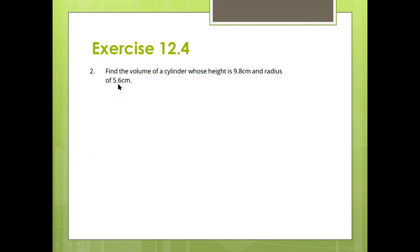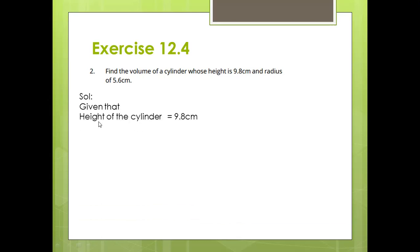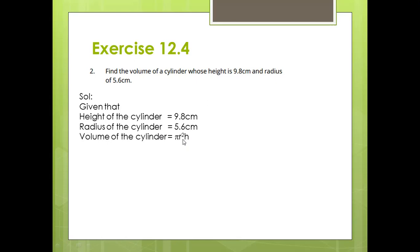Exercise 12.4, question number 2 — the first question which is included. Find the volume of a cylinder whose height is 9.8 cm and radius of cylinder is 5.6 cm. Remember students, first of all you have to memorize the formula of volume of a cylinder. That is pi r square h. You have to memorize this formula pi r square h. Given that height of the cylinder is 9.8 cm, radius of the cylinder is 5.6 cm. Height is denoted with small h and radius is denoted with small r. Volume of the cylinder — that is the formula to calculate the volume of the cylinder — that is pi r square h.